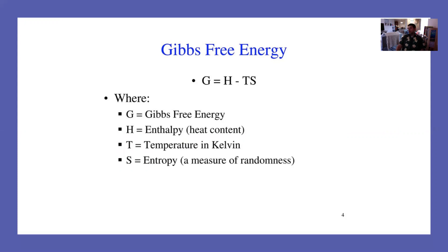Up to this point, we know that if the change in entropy is positive in the universe, then we have a spontaneous process. We know the change in entropy of the universe equals the change in entropy of the system plus the change in entropy of the surroundings. We know how to look at the system — if the volume increases, the entropy increases. And we saw that the change in entropy for the surroundings is negative delta H over T. We know that the change in entropy for the surroundings has to do with heat flow. That's the only way we have right now to determine if a process is spontaneous.